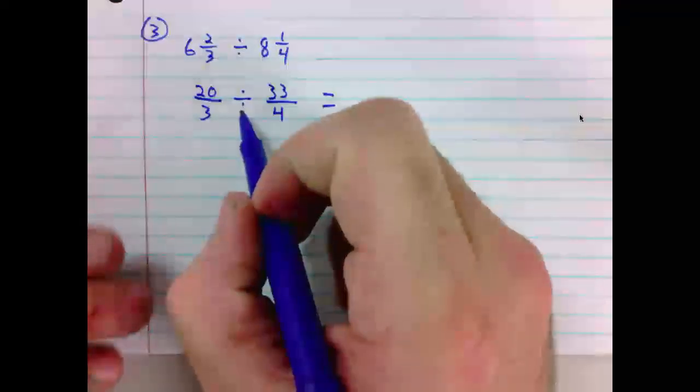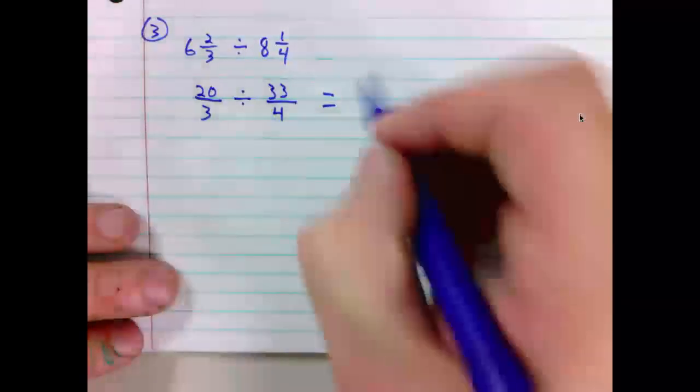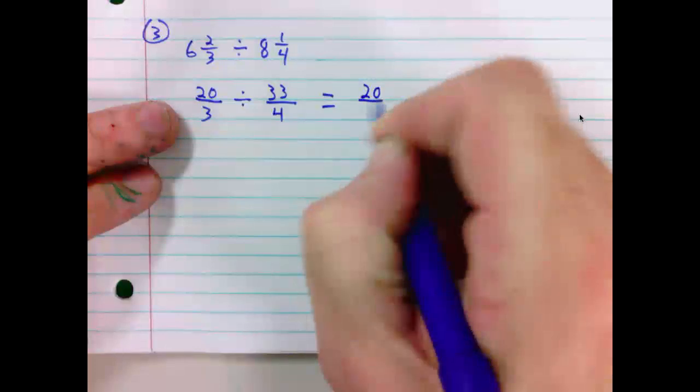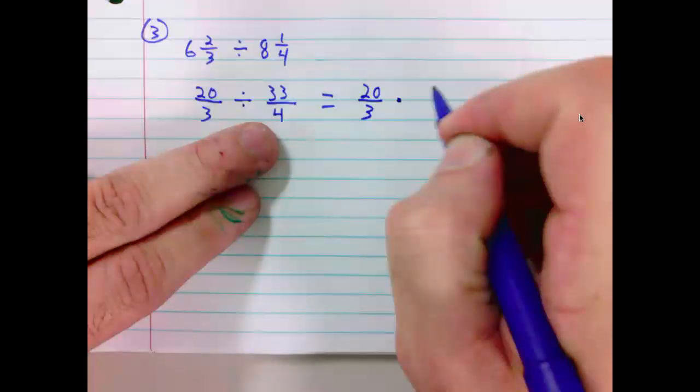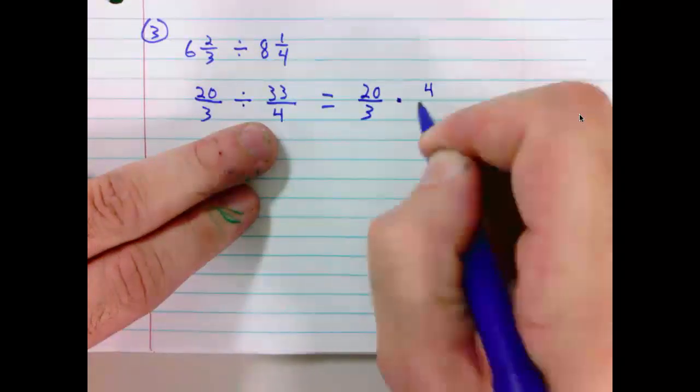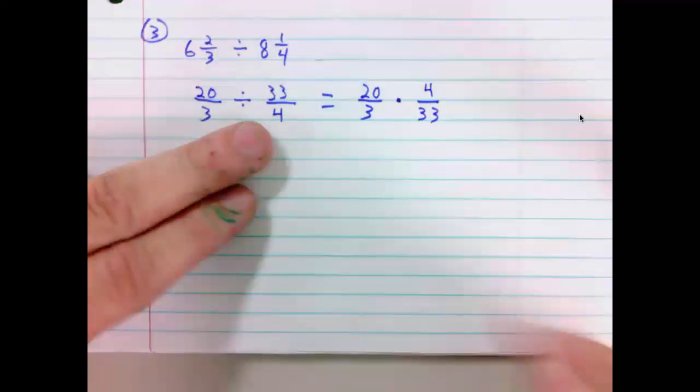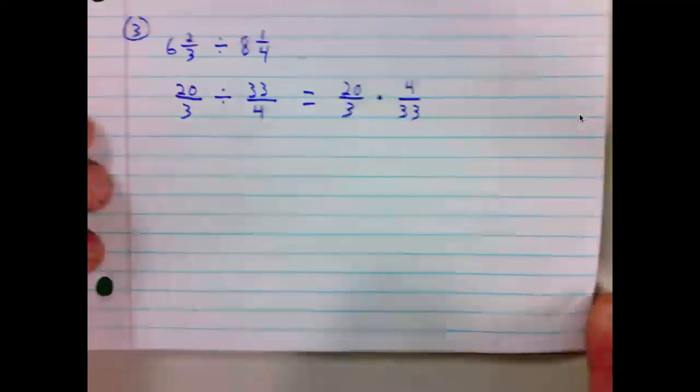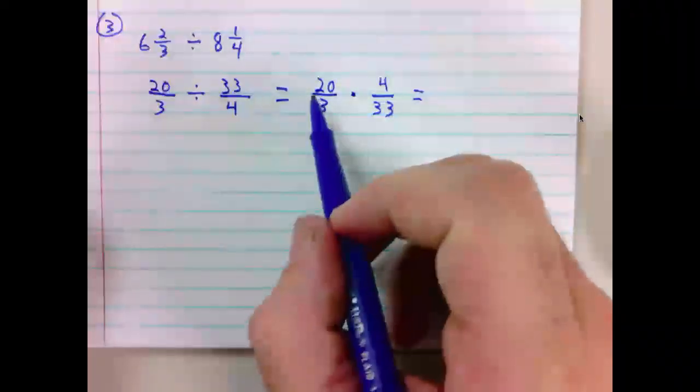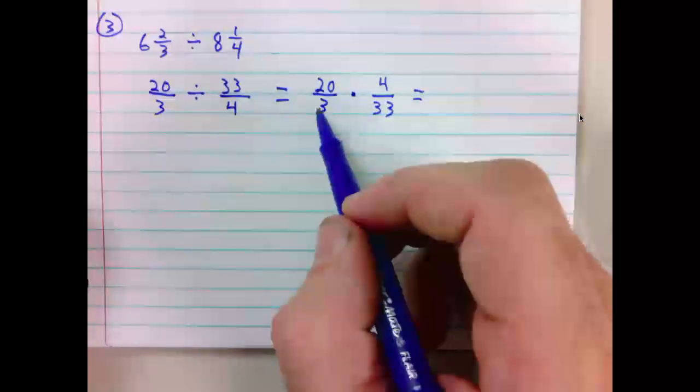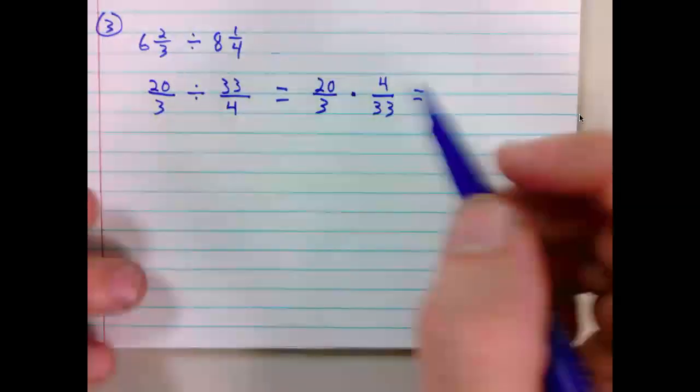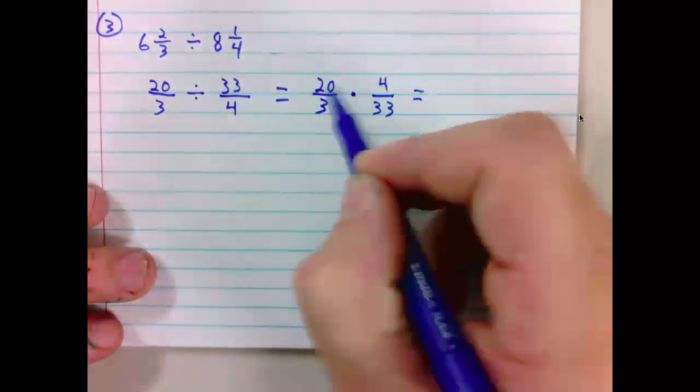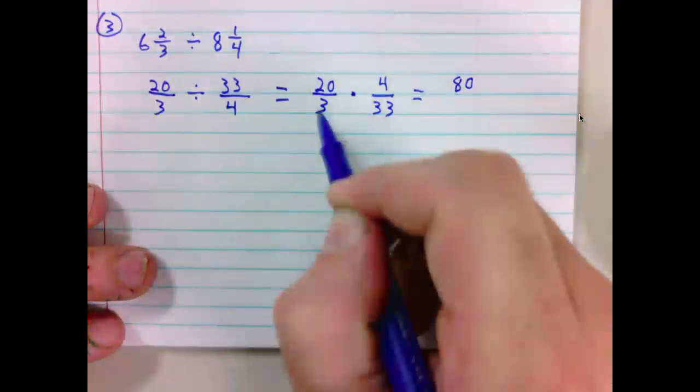When we divide, and we're dealing with fractions, we keep, change, flip. Keeping 20 over 3 the same, changing our division to a multiplication, flipping over the second fraction, 4 over 33. When multiplying, we don't need a common denominator, but we should first consider any reducing that we might be able to do. Any denominator can reduce with any numerator. Unfortunately, we have no common factors. Multiplying straight across, 20 times 4 is 80, 3 times 33 is 99.